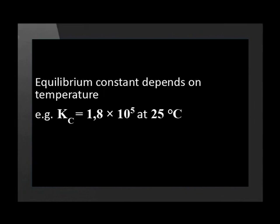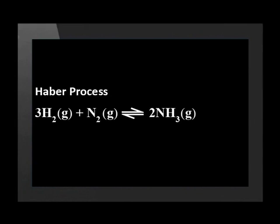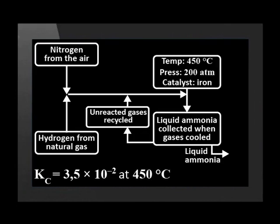In industry, reactions often take place at high temperatures in closed containers, such as in the Haber process for the production of ammonia. Chemists need to know the value of the equilibrium constant at the temperature of the reaction. In this case, the temperature of the reaction is 450 degrees Celsius.